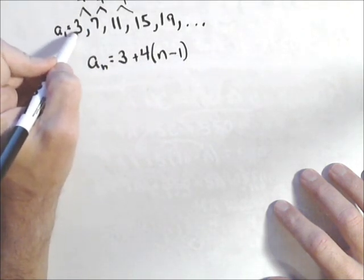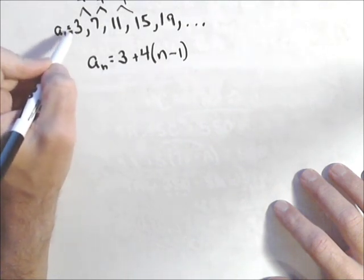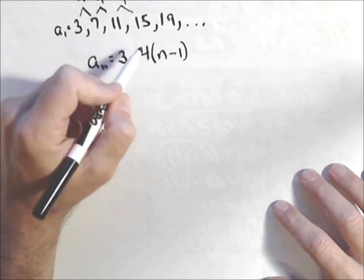The reason is because this is not a y-intercept. Notice the input is 1 when we have 3, not 0, so we back it up 1.